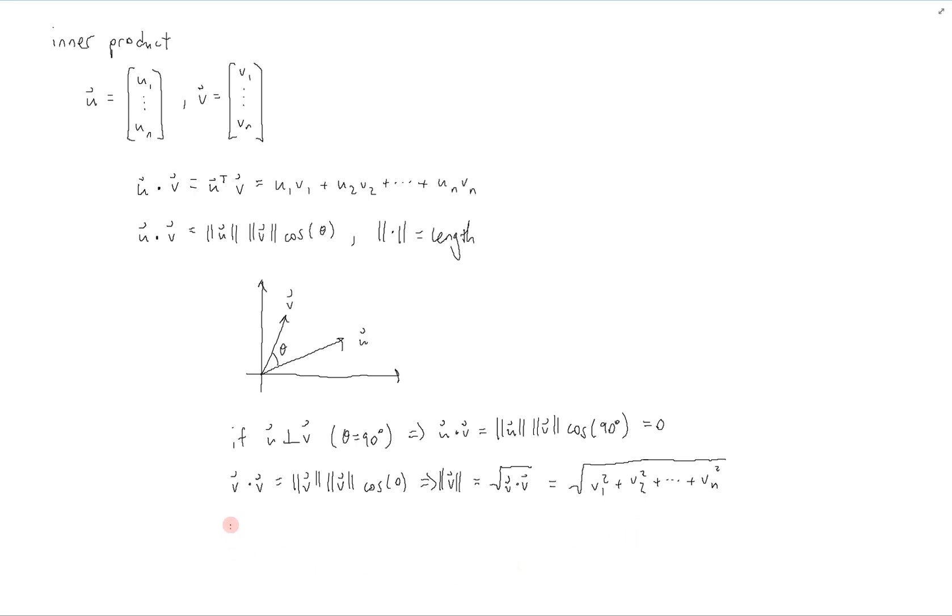And one more observation we can make is that the length of the difference between two vectors is going to be defined by the same kind of thing, where now we replace each of these v's by v minus u. So therefore, it's going to be the square root of v minus u dot v minus u. And if we write that out, we get the square root of each of the components' difference squared, and add all those together.